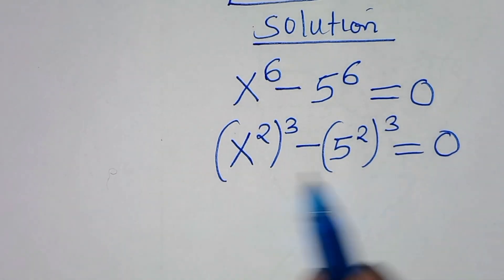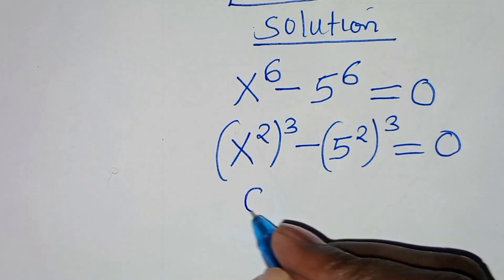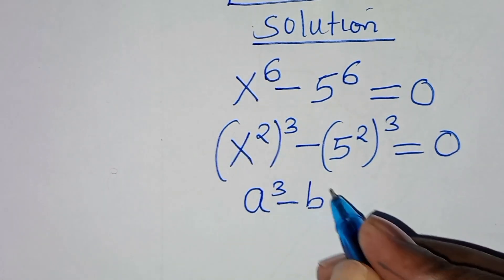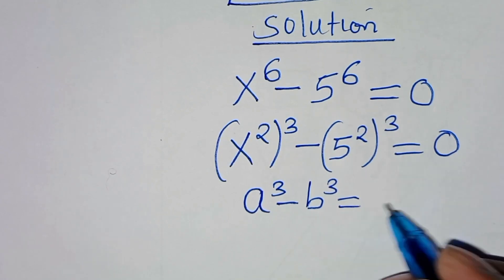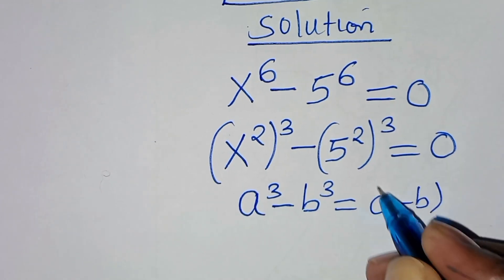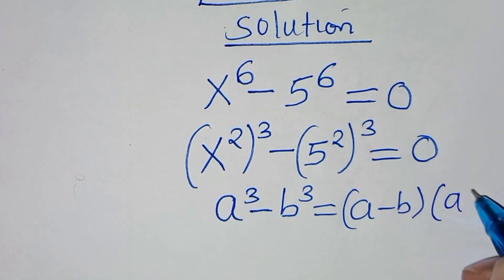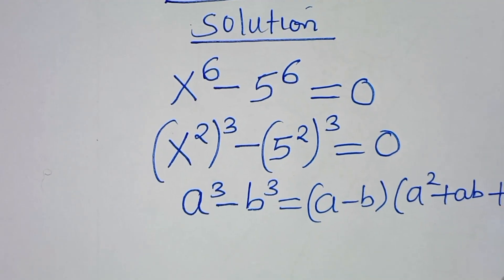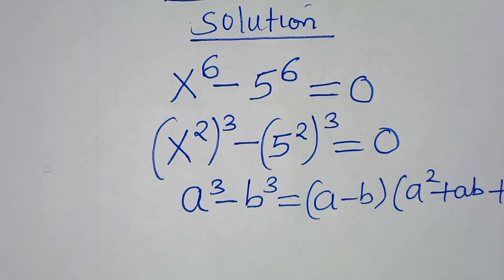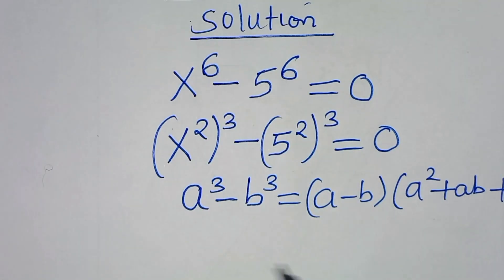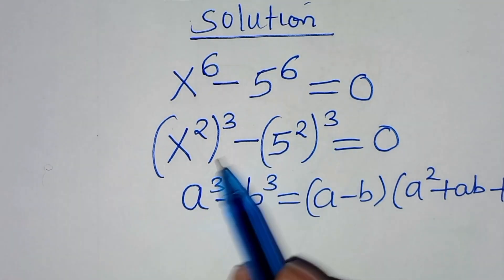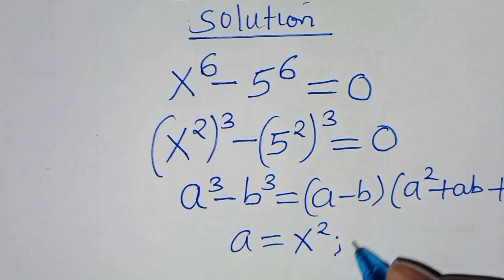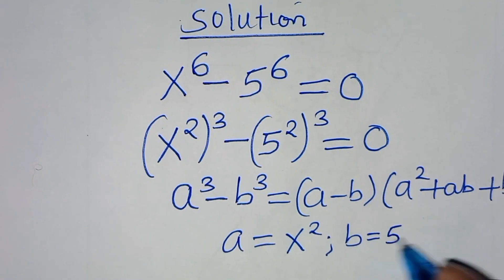Now, this equation is actually in the form of difference of 2 cubes, which we can express as a cubed minus b cubed, which is equal to (a minus b)(a squared plus ab plus b squared). Applying this identity, from this part, we have that a is equal to x squared and b is equal to 5 squared.